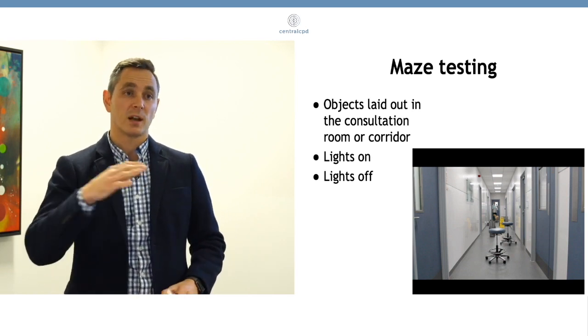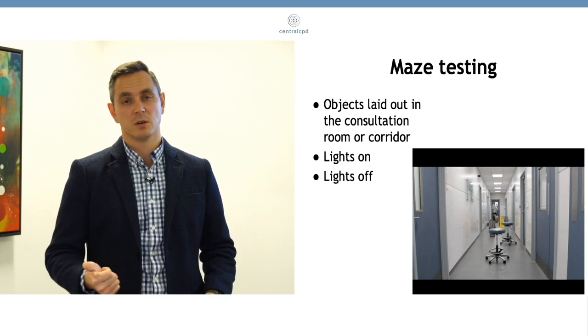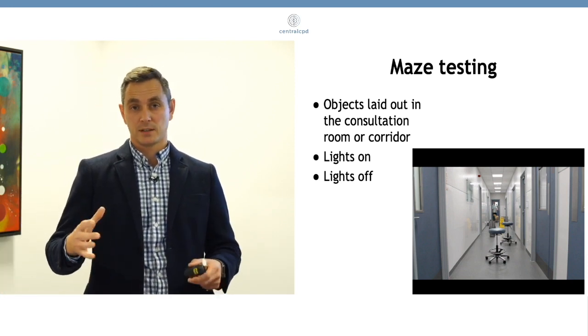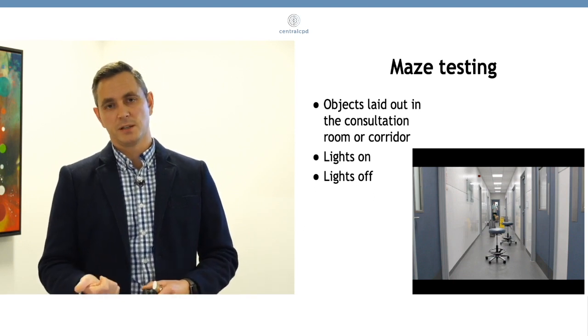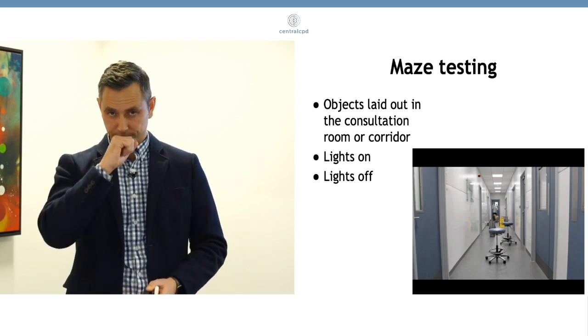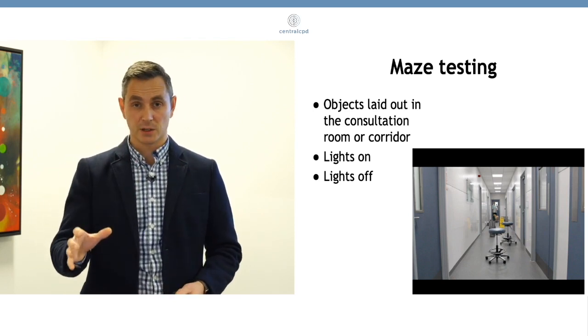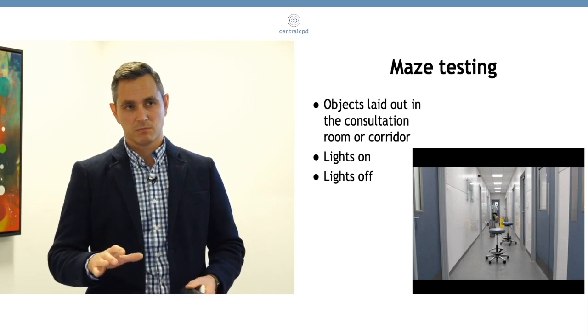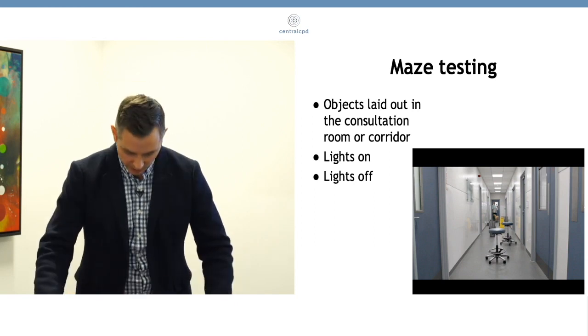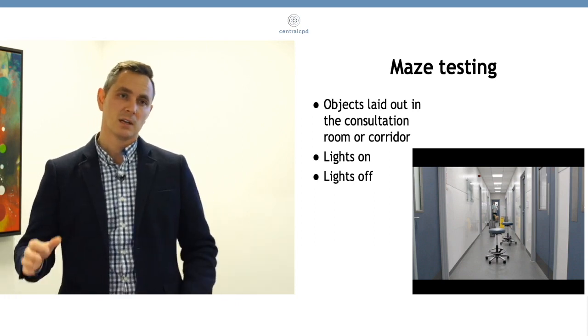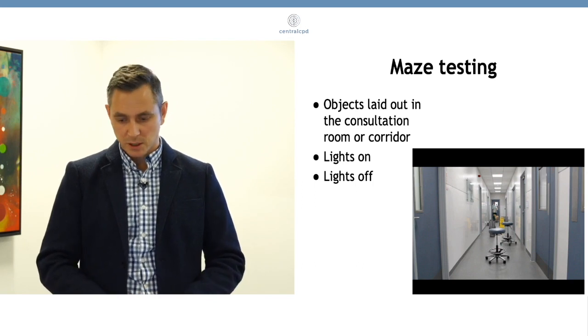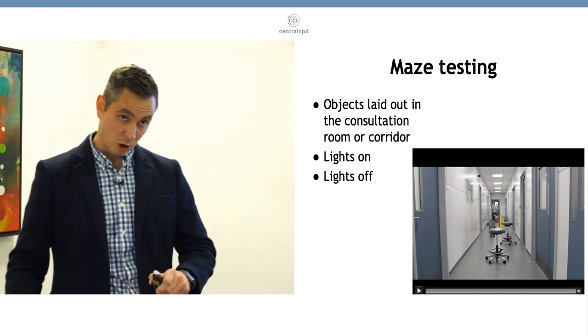We can do maze testing with the lights on and lights off. There are some eye conditions which basically manifest as night blindness. A good example is generalized progressive retinal atrophy. We would see that in middle-aged Cocker Spaniels, and they tend to lose their night vision first. These dogs cope really well with the lights on. As soon as you turn the lights off, they totally change. Their nose goes to the ground, they start bumping into things. So doing maze testing with lights on and lights off can give you more information. And we're just going to watch a video of just doing a simple maze test in a corridor.